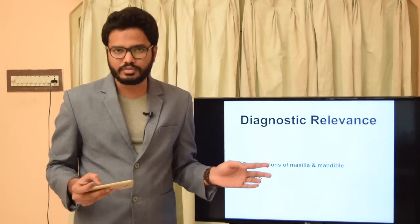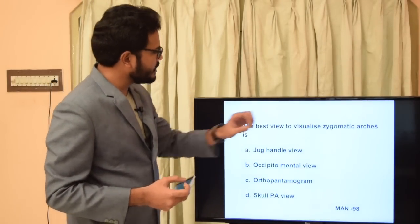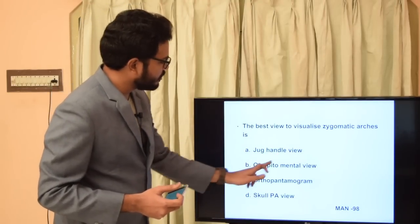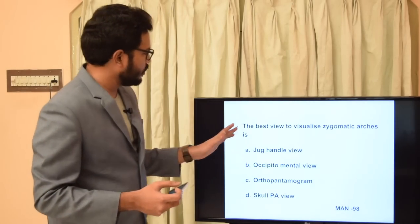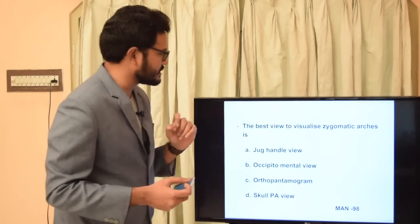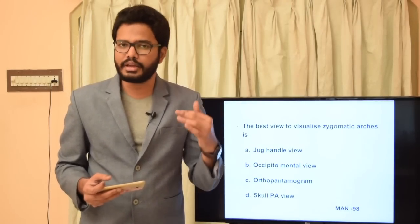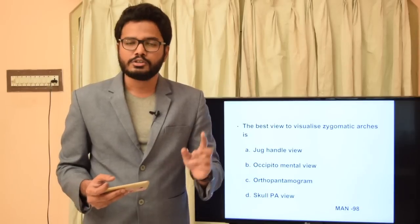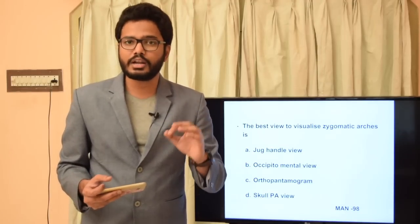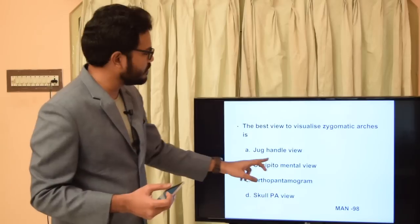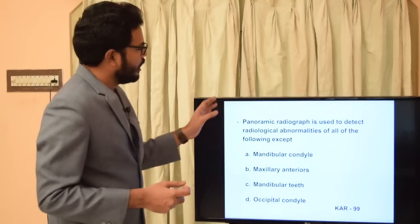Now let's look at multiple choice questions on this topic. The best view to visualize zygomatic arches is: (a) jug handle view, (b) occipital mental view, (c) pantomograph, or (d) skull PA view. As discussed, submental vertex projection is mainly used to visualize the base of the skull and zygomatic arches. With exposure reduced to one-third, it's called the jug handle view — best for visualizing zygomatic arch fractures. The answer is option A.